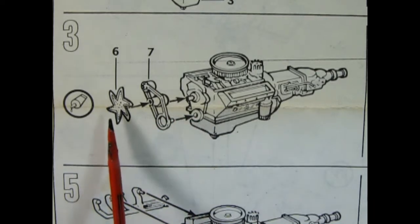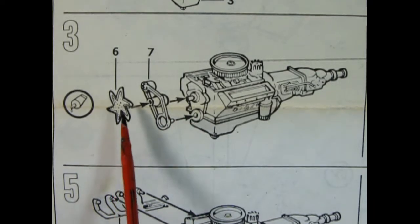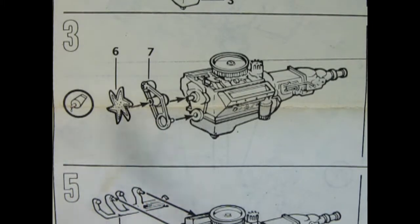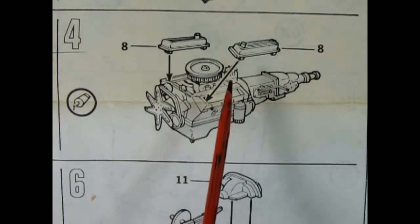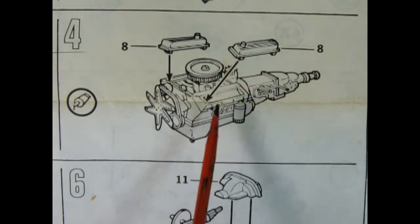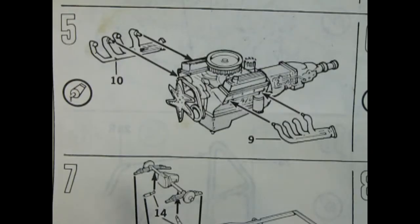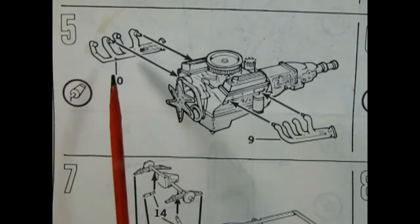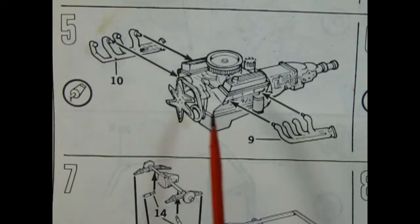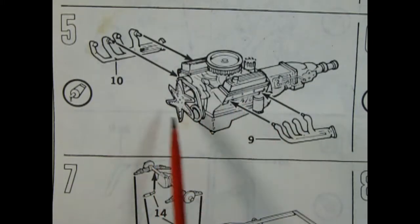Step four shows our chrome valve covers being glued in place. Remember to scrape the chrome off the bottom on that contact surface first. Panel five shows our exhaust manifolds being glued in place and these things are really awesome looking. Keep in mind that this is a gigantic 454 Chevy V8.